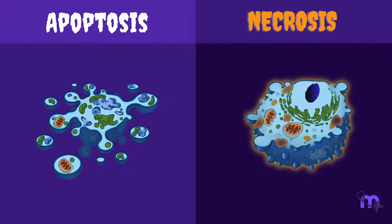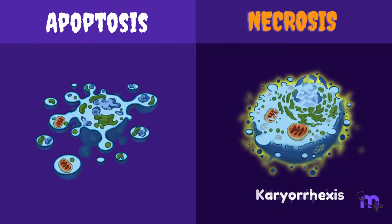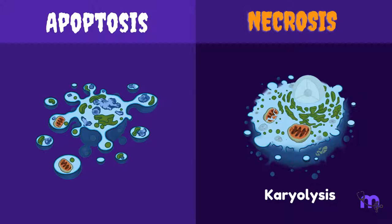The nucleus of an apoptotic cell shows condensation or pycnosis. Karyorrhexis and karyolysis is seen in necrosis.